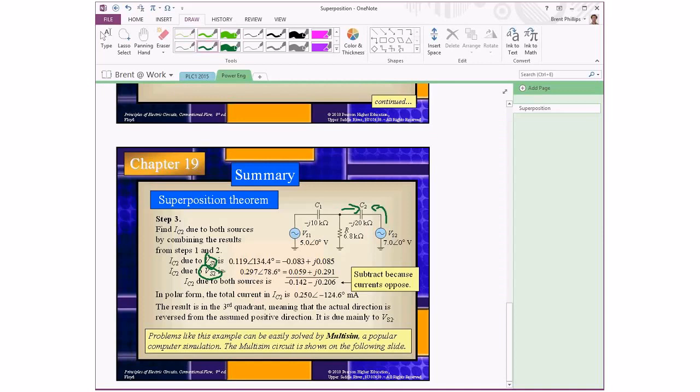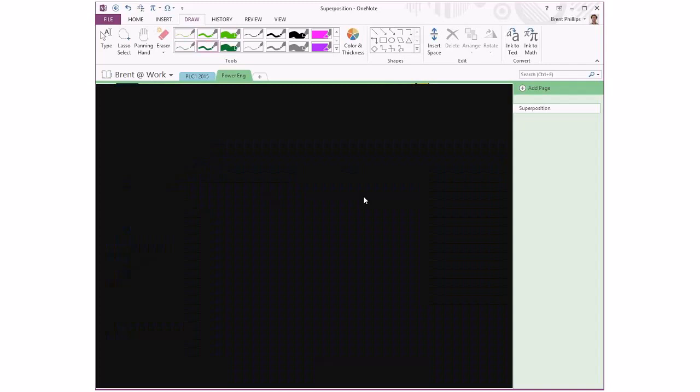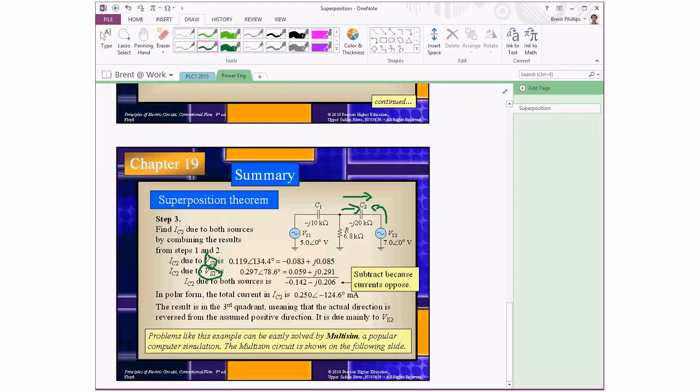You can do that carefully like shown here, using your calculator with the conversion into rectangular format. Or if you have a complex capable calculator, you can just enter the numbers directly in polar form and subtract one from the other. And we want to make sure that we end up with an answer in this direction. It always helps to show an arrow on your circuit diagram for what your reference direction actually is. In this case, we end up with a value of 0.25 milliamps with a negative angle.